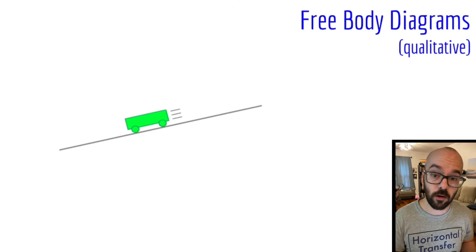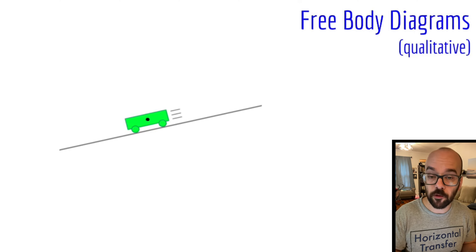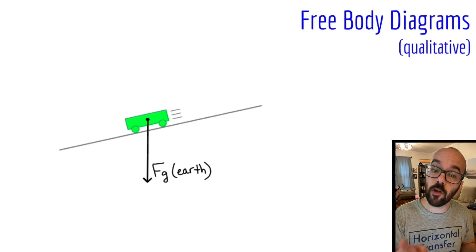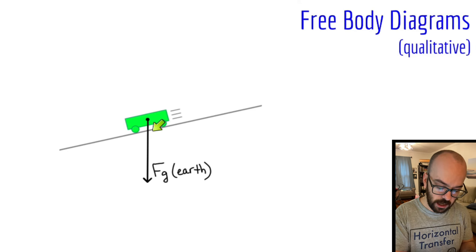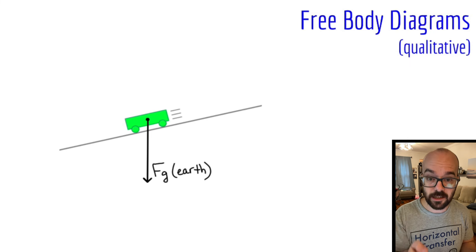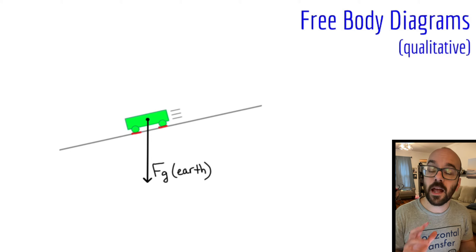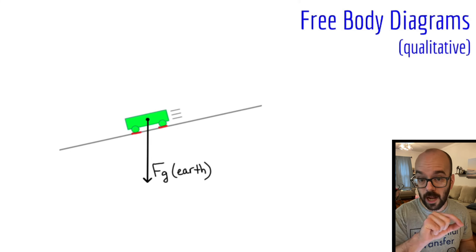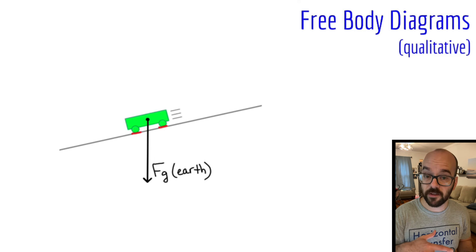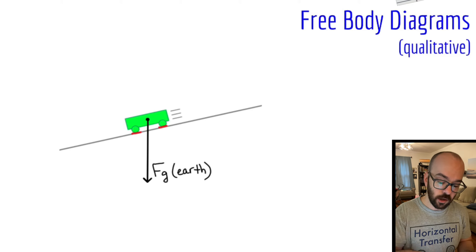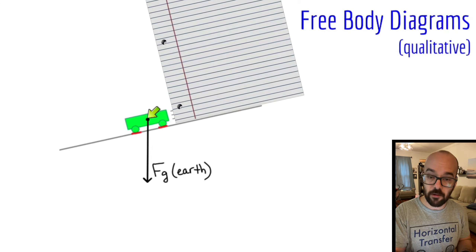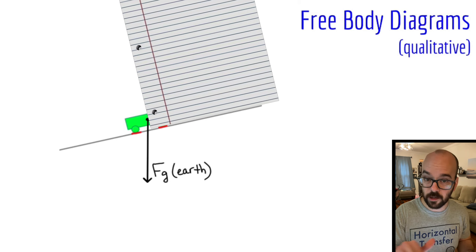In our second example, we have a cart rolling down a ramp. Again, we draw our dot. The force of gravity is pointed directly downward — even though this is on a ramp, a lot of students want to draw this force down and to the right, but it's going to be exactly downward, because that's where the center of the earth is. Next, let's check for any normal forces. The wheels are touching the ramp, so I'll highlight right there. For the normal force perpendicular to the ramp surface, here's what I always tell students: take another sheet of paper, line it up with the ramp and the dot, then use that to draw the normal force acting on the object.